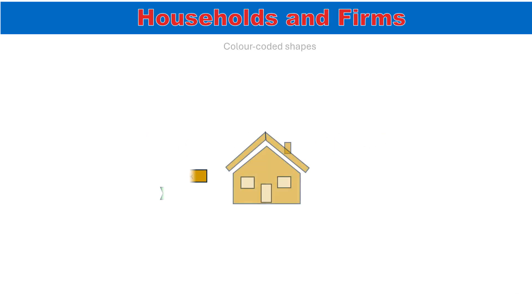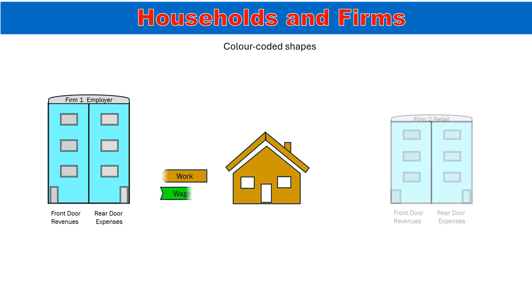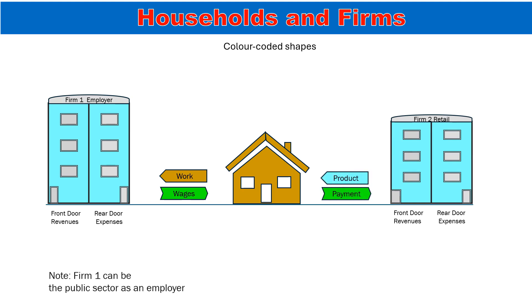The household, in the center, works for the first firm shown by the brown arrow and receives income as the green wages arrow. The second firm supplies products shown by the blue arrow and receives payment as a green arrow by return. This indicates the household's dual function as part of the circular flow in the private sector.